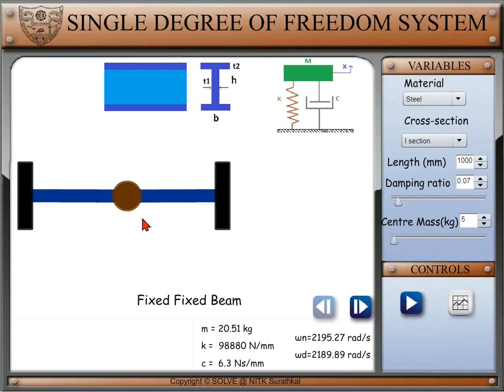In the animation section, we have a fixed beam with I cross section and equivalent spring mass damper system is shown. Below we can see equivalent mass of the system M, stiffness of the system K, damping of the system C, natural frequency omega n, and damping natural frequency omega d.